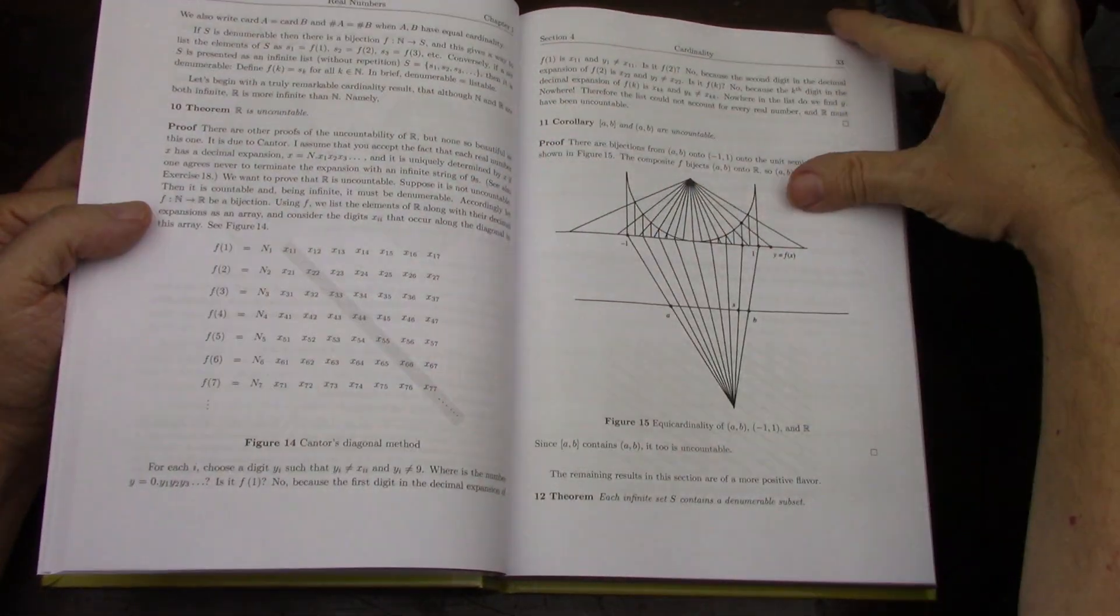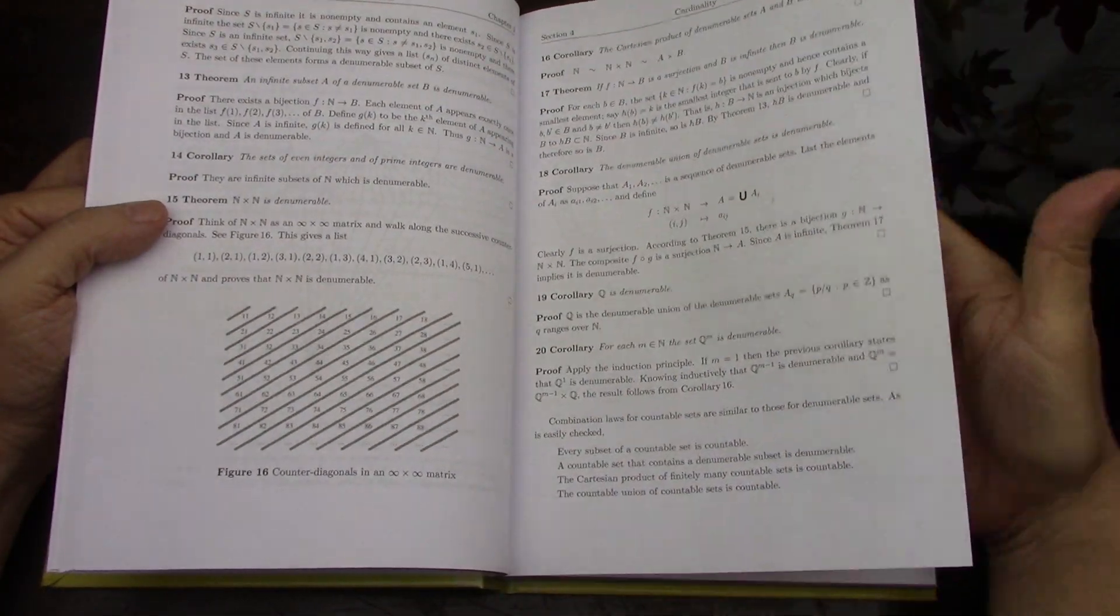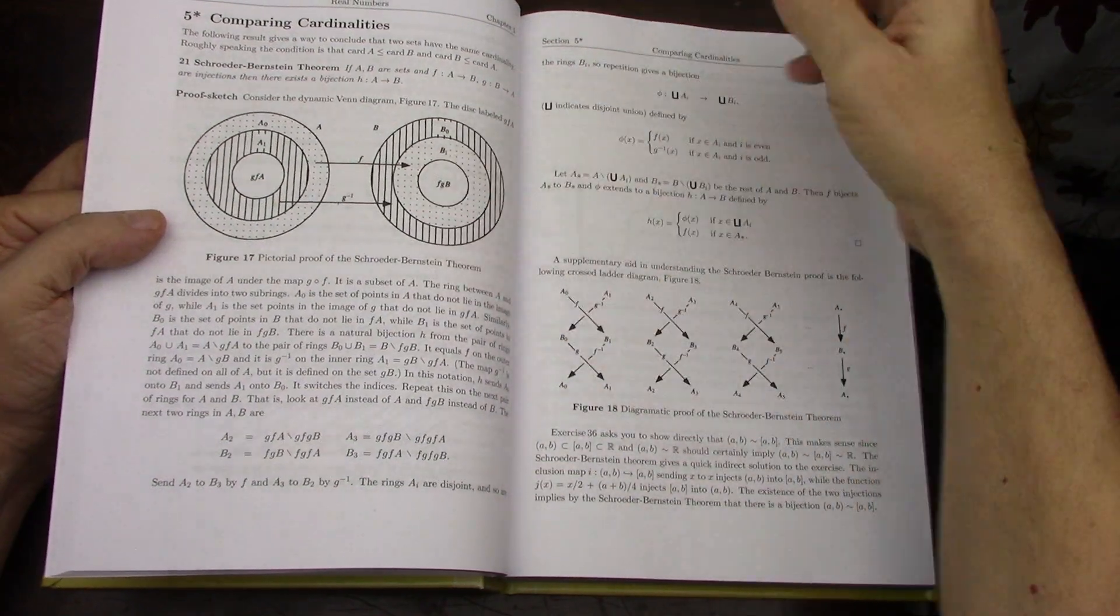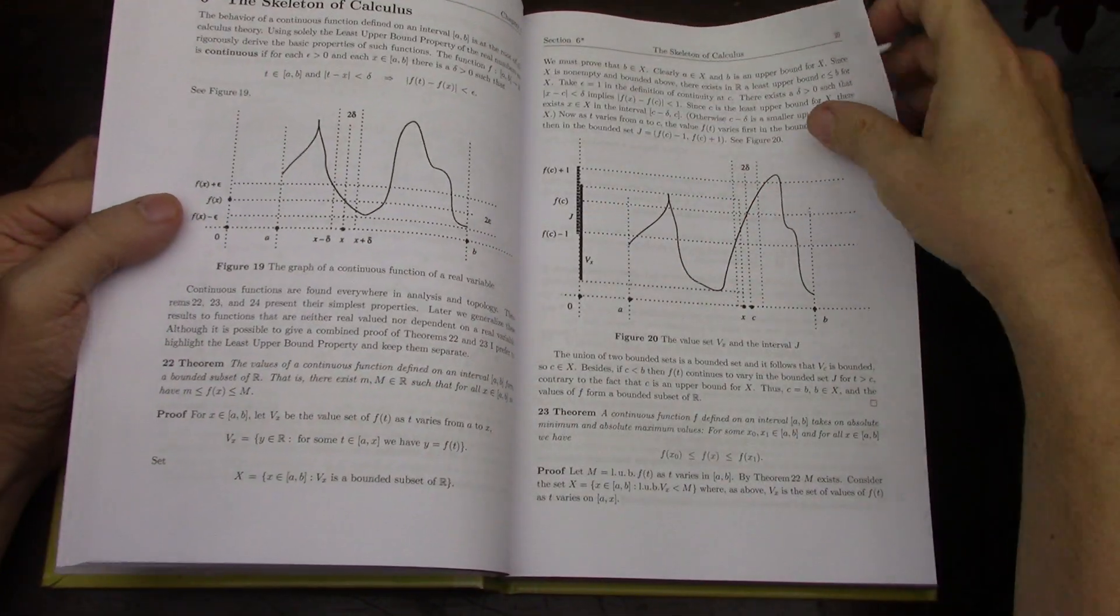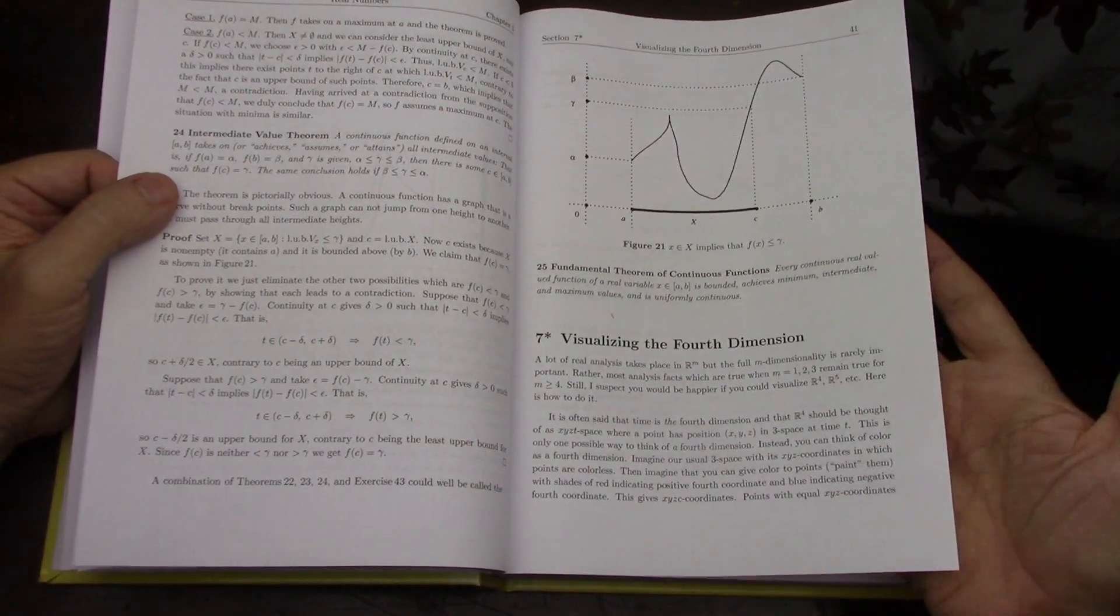Of course this figure is in every analysis book. Yeah, this is the whole Cantor counting business of comparing cardinalities. So, but yeah, like the comments said, the figures in this book are just fantastic.